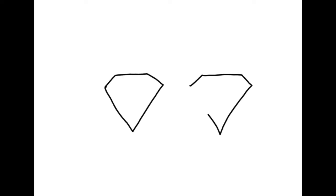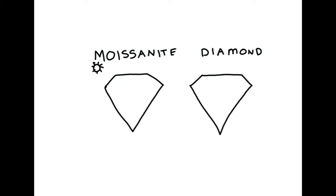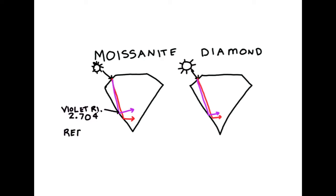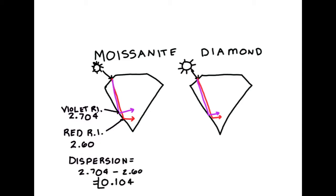I want to clarify something right off the bat: refractive index and dispersion are not actually the same thing. In order to explain the difference, I'm going to be looking at two stones — moissanite and diamond. As white light enters each of these stones, it's going to break up into its different colors. Red light will refract less than violet light at the other end of the spectrum. To find the dispersion for each stone, we take the refractive index of violet light and red light and subtract to find the difference. This is called the dispersion.